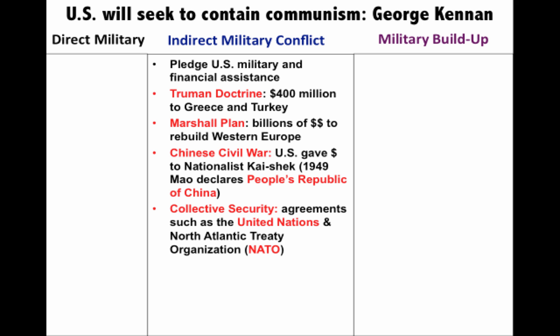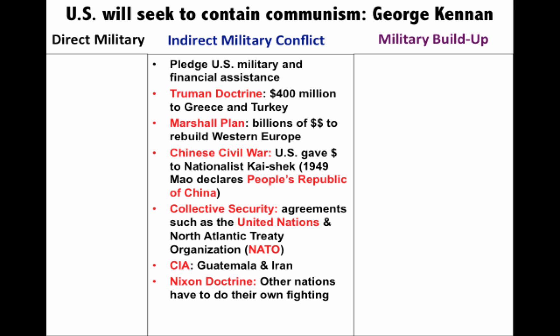Basically what this military alliance said was: if there was an attack on one member, it was considered an attack on all. The U.S. is also going to be involved in indirect military conflict with its use of the CIA — especially starting with Eisenhower's administration, where the CIA tried to get rid of regimes in Guatemala and Iran. And as time goes on, the U.S. finds itself overcommitted around the world. Under President Nixon, you have the Nixon Doctrine — basically saying to Vietnam and other countries: you are going to have to do your own fighting. The U.S. will provide money and military equipment, but not U.S. soldiers at all times. This is known as the policy of Vietnamization.